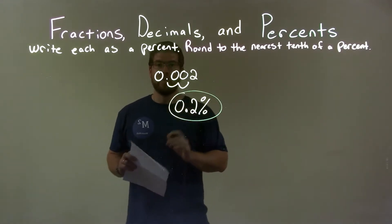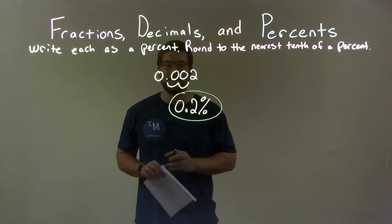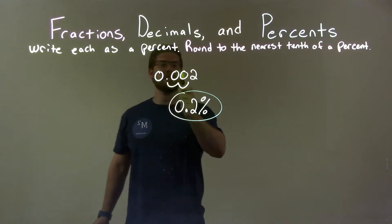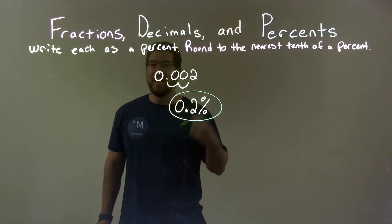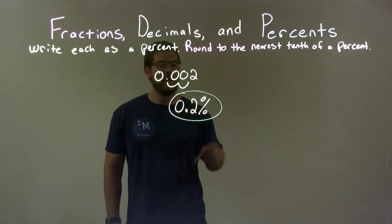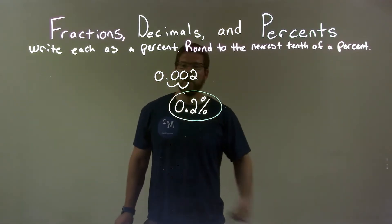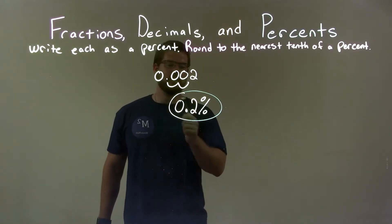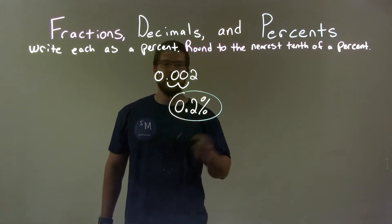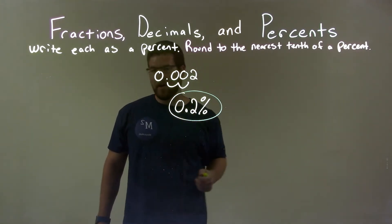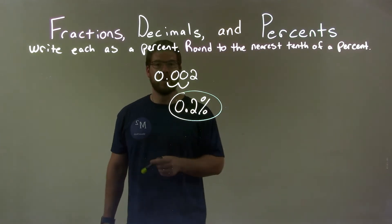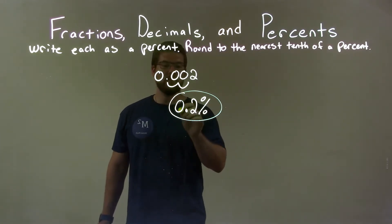And there we go, our final answer. Quick recap: we're given 0.002 and we need to write that as a percent. Move the decimal point two spots to the right, which gives us 0.2. Slap that percent sign right there, and there we have a final answer of 0.2 percent.